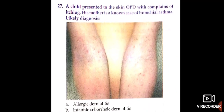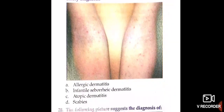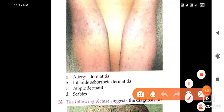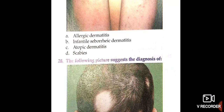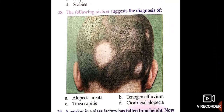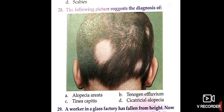A child presented to skin OPD with complaints of itching; the mother is also a known case of bronchial asthma. The likely diagnosis here is atopic dermatitis. The following picture is suggestive of —